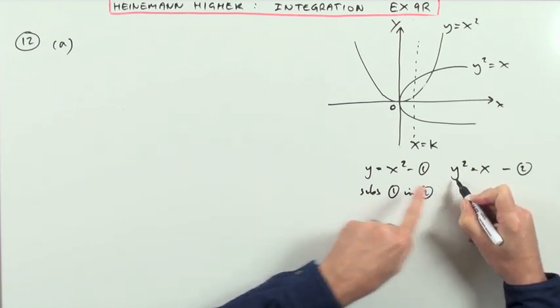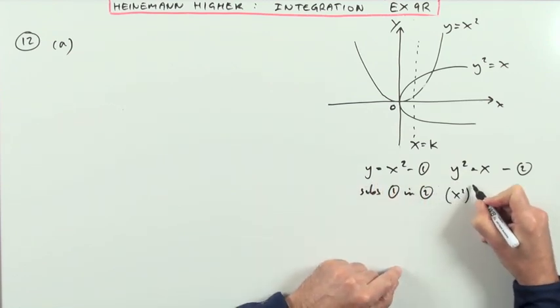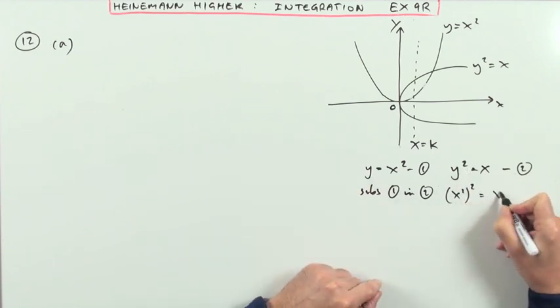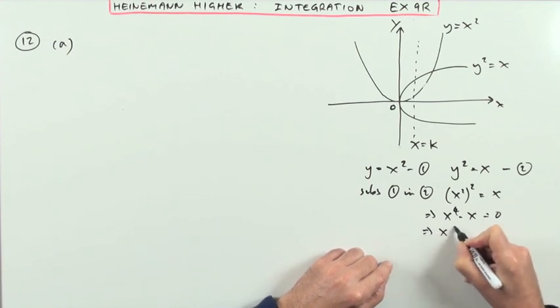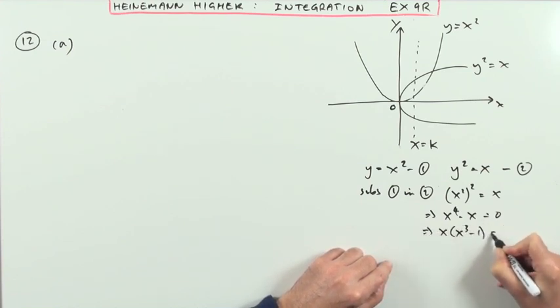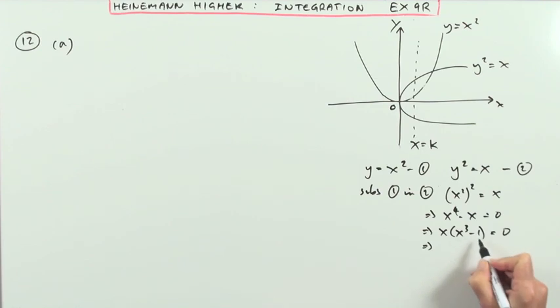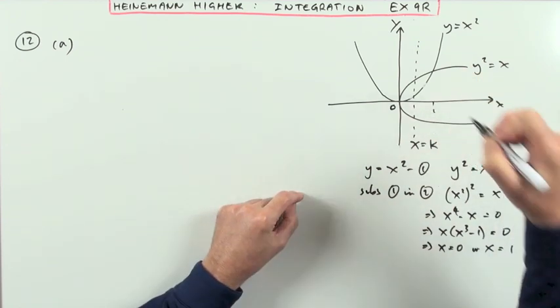So where it says y there, I'm going to write x squared. So x squared squared equals x, that means x to the 4 minus x equals 0. Taking out a common factor of x, I've got x cubed minus 1, and that's only the one solution there. So I've got x equals 0 or x equals 1. So that means they're crossing again at 1.